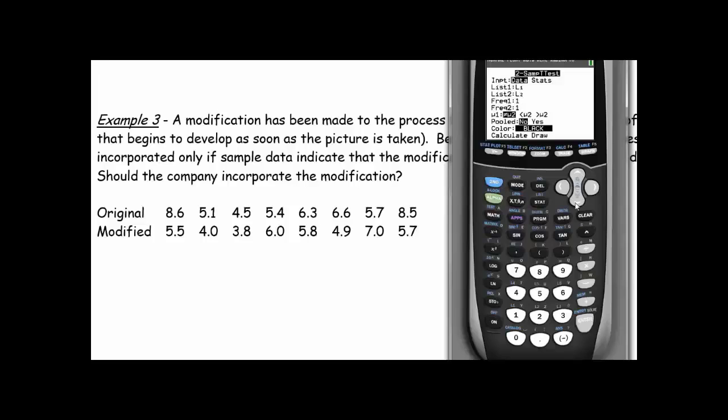As far as directionality goes we're just going to test and see whether there's a difference in the process. We're not really saying that one is better than the other but it would make sense that the modified should be faster so I can probably put a greater than or less than in this but we'll just do a not equal to and then calculate our p-value.